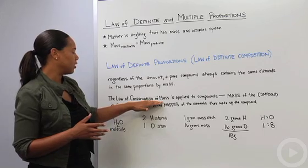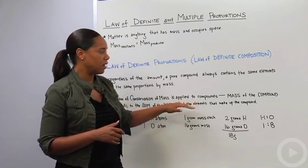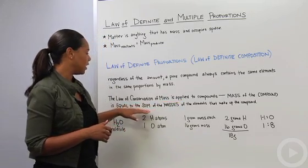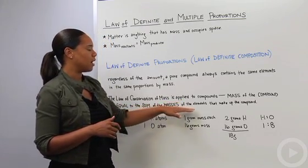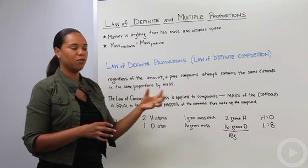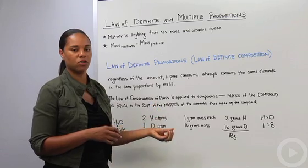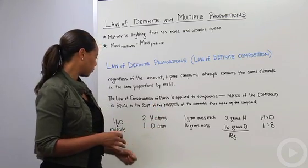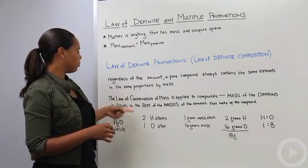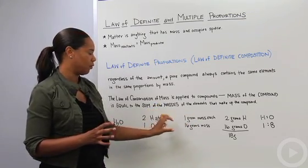Again, a reminder that the law of conservation of mass is applied to compounds, and the mass of the compound is equal to the sum of the masses of the elements that make up the compound. Remember, a compound is just two elements together. Water is a compound that's composed of hydrogen and oxygen. Let's apply the law of conservation here based on the mass for water and work that out.